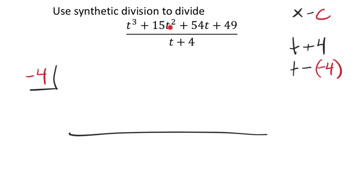And our polynomial was already in descending order, so that's good. And I don't see any T's that are missing, right? T squared, a T cubed, T squared, T, and then a constant. So we need all those coefficients. I've got a 1, phantom 1, T to the power of 3, so that's my first number. The next coefficient is 15. The next coefficient is 54. And then the final value there is 49.